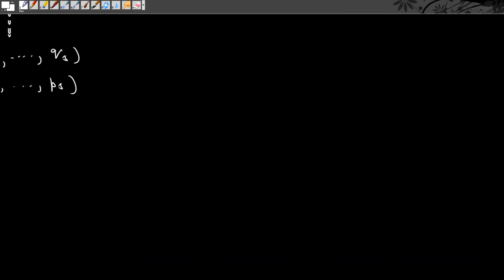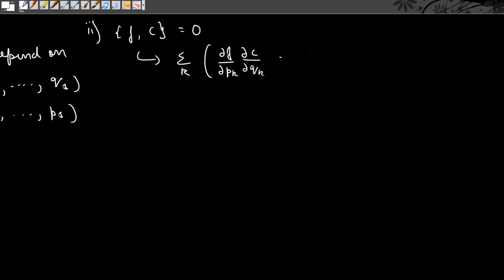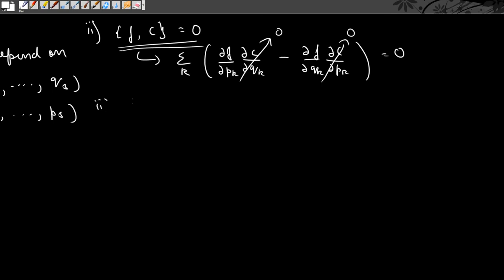The next property says that the Poisson bracket of a function with a constant must equal zero. From the definition: summation over K of ∂F/∂P_K times ∂C/∂Q_K minus ∂F/∂Q_K times ∂C/∂P_K. Since differentiating a constant with respect to anything gives zero, both terms become zero, so the Poisson bracket is zero.